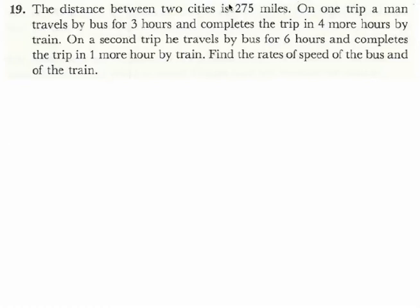Question 19. The distance between two cities is 275 miles. On one trip, a man travels by bus for three hours and completes the trip in four more hours by train. On a second trip, he travels by bus for six hours and completes the trip in one more hour by train. Find the rates of speed of the bus and the train.